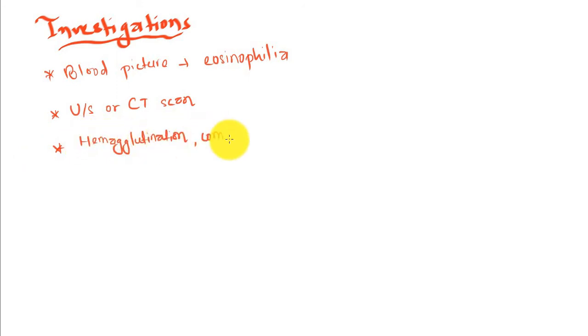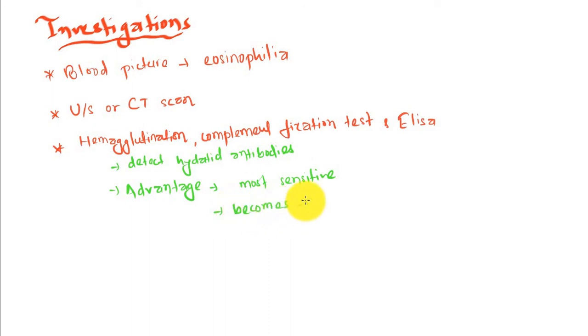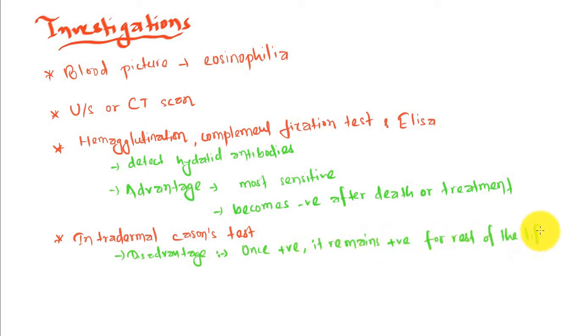Hemagglutination test or complement fixation test and ELISA test can be performed. The advantage of ELISA is it detects hydatid antibodies and is the most sensitive test. It becomes negative after death or treatment, and it becomes positive for the rest of life. It gives false positive results in 40% of cases.